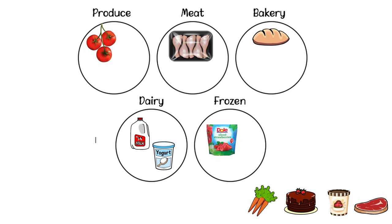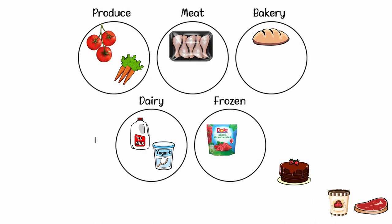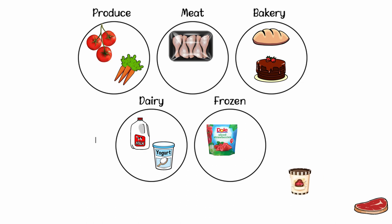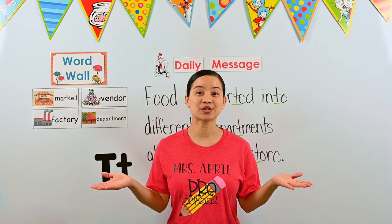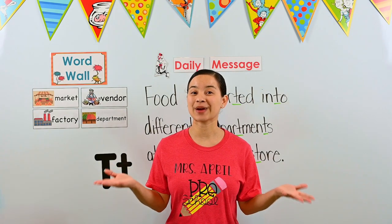Next we have carrots. If you said the produce department, you are correct. Oh look, it's a cake. What department would we find cake in? If you said the bakery, you are correct. Next we have ice cream. What department would we find ice cream in? We find ice cream in the frozen department. And we have one more picture — it's steak. What department would we find steak in? If you said the meat department, you are correct. Great job, friends! You helped me sort all of the food items into the right departments in the grocery store.